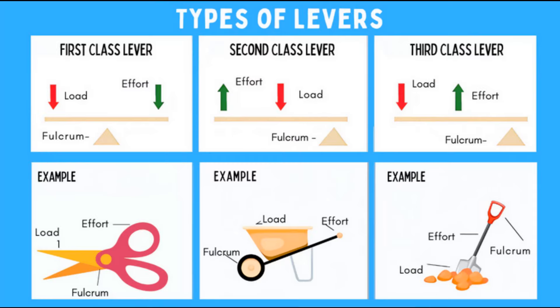There's also a type 2 and a type 3 lever. A type 2, or second-class lever, has a fulcrum at one end, the effort at the other end, and the load somewhere between them. A third-class lever swaps that around — it has the load at one end, the fulcrum at the other, and the effort applied somewhere between. An example of a second class would be a wheelbarrow; a third class would be a spade.